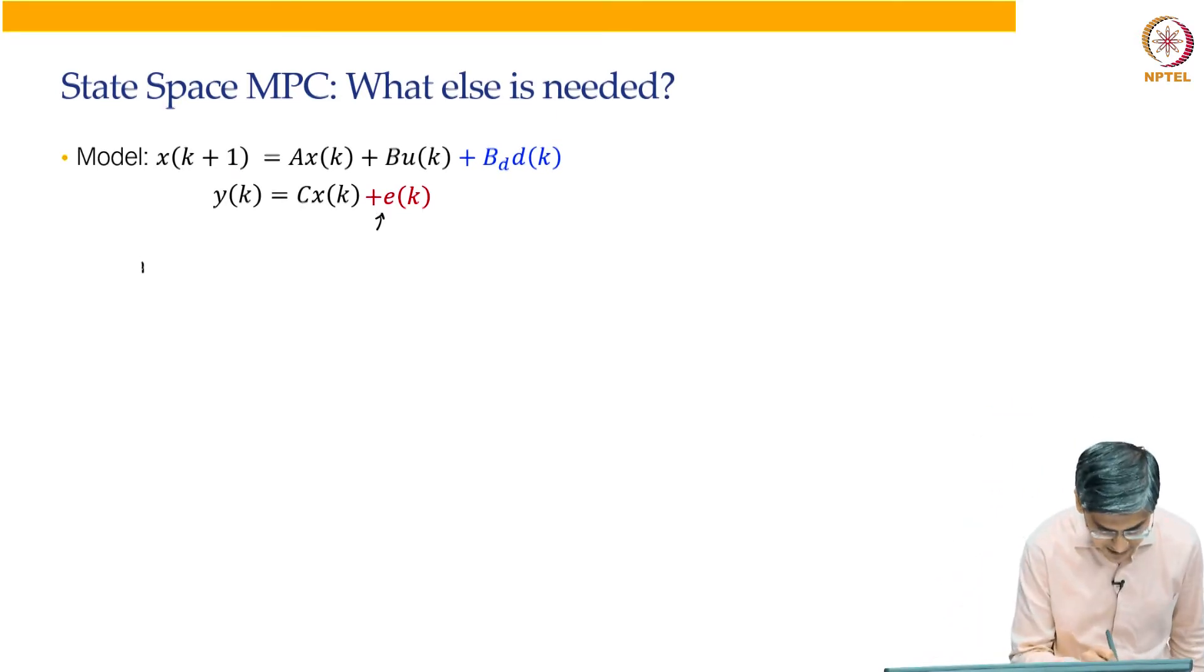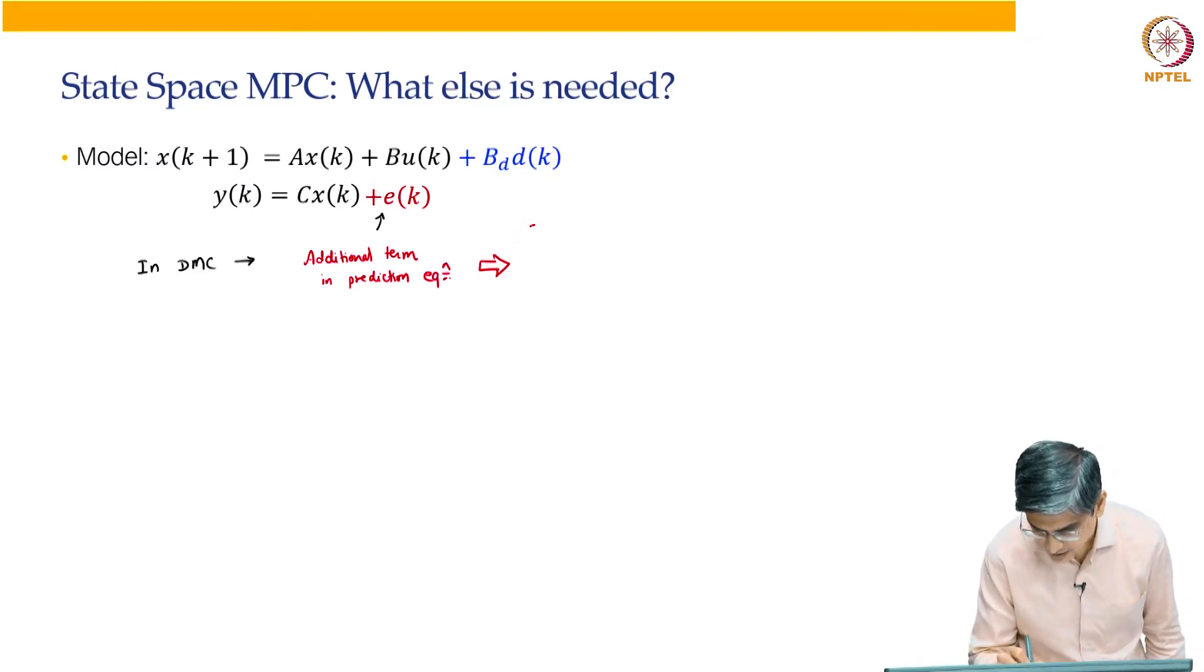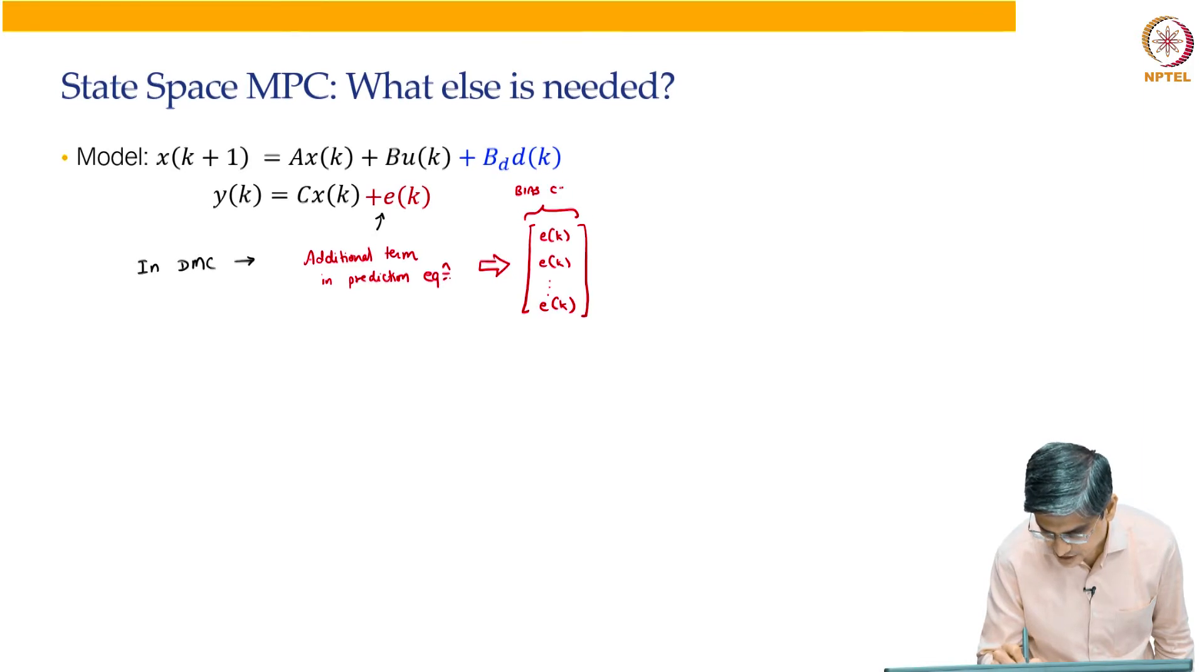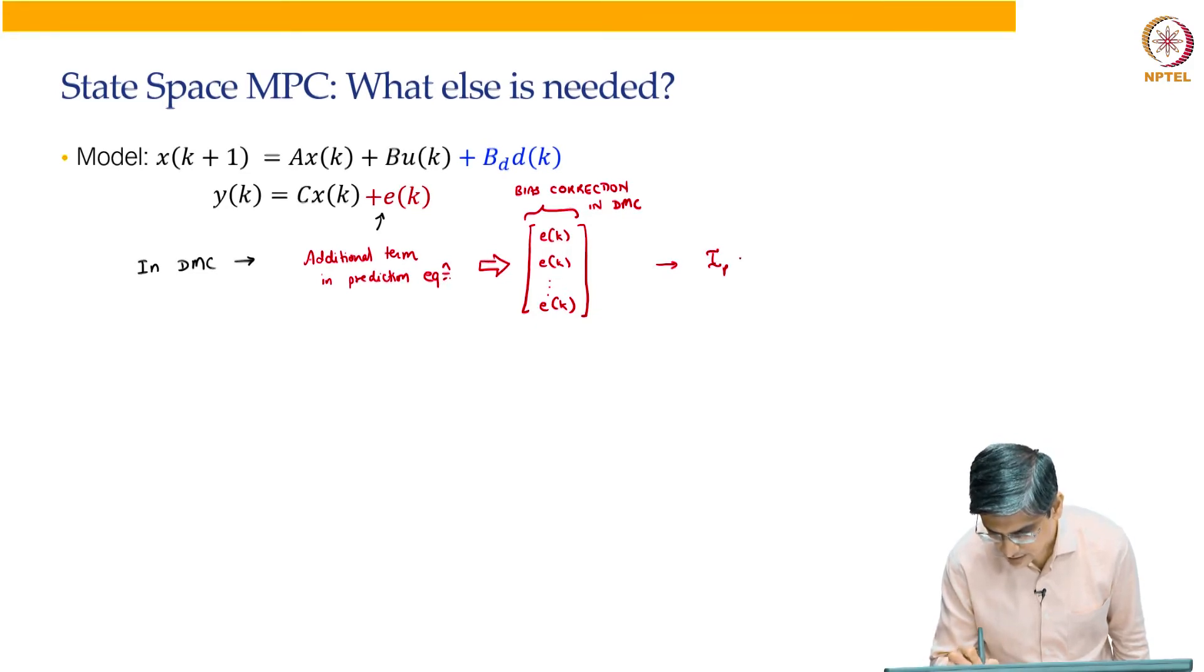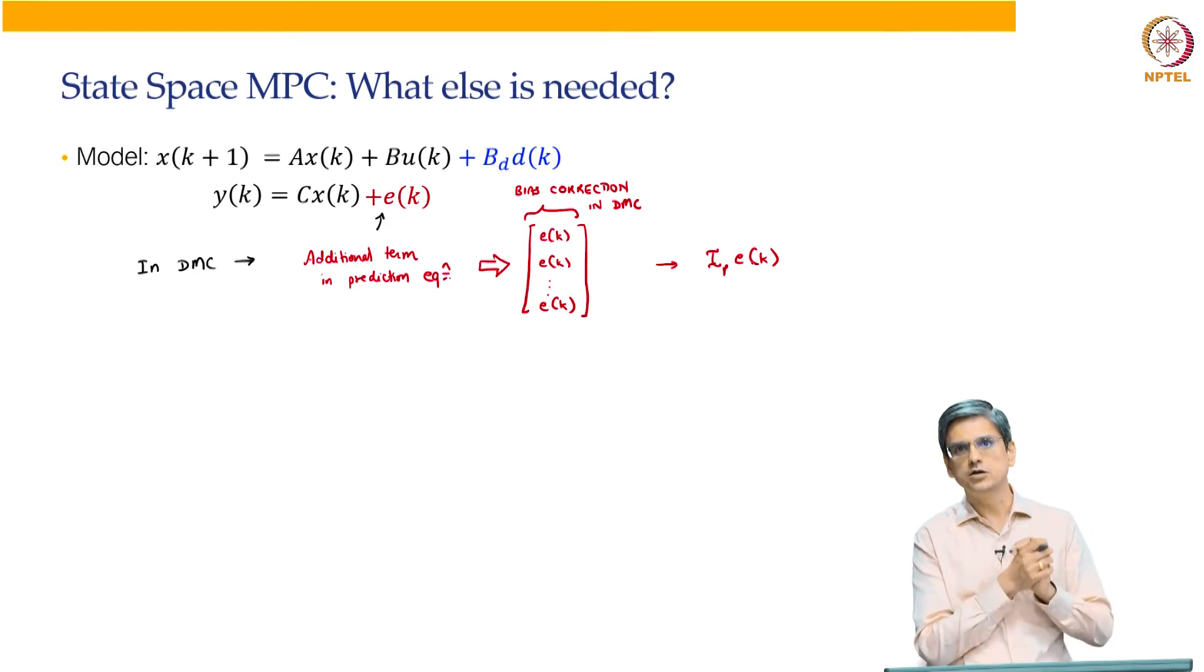How did we do that in DMC? In DMC, what did we do? In DMC algorithm, we had this additional term in prediction equation which was nothing but ek ek and so on. What was this? This was just simply bias correction in DMC, which we had written down as nothing but ip multiplied by ek. Now, why did that bias correction work?